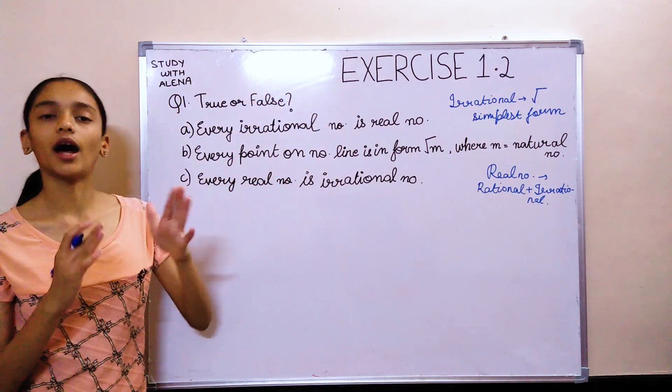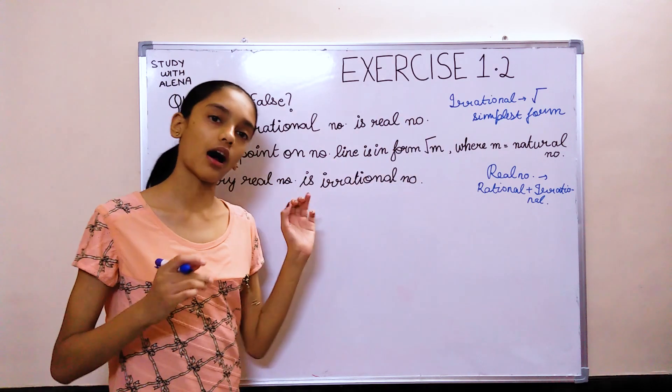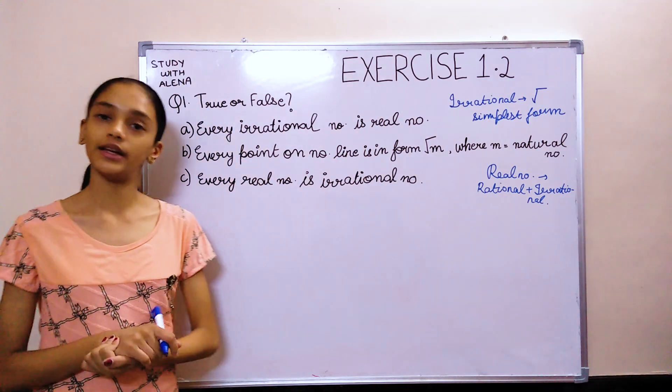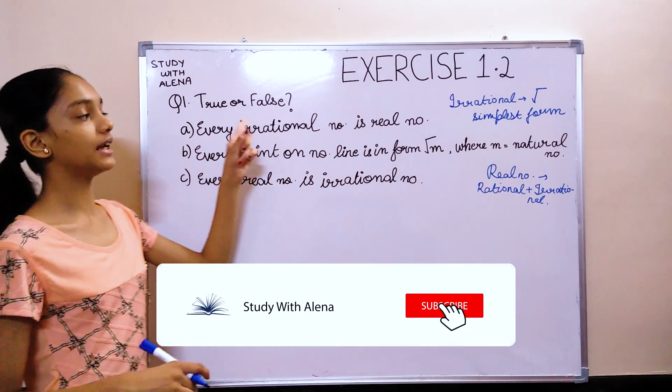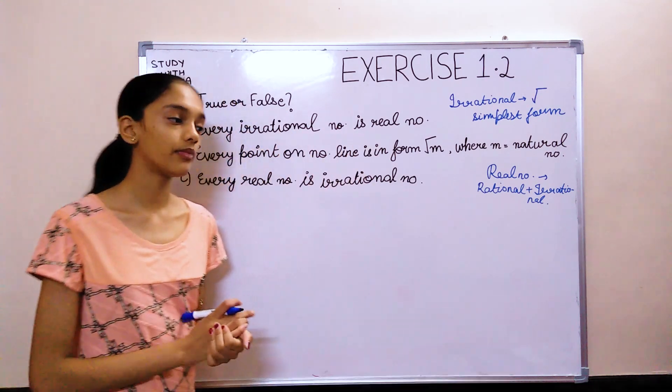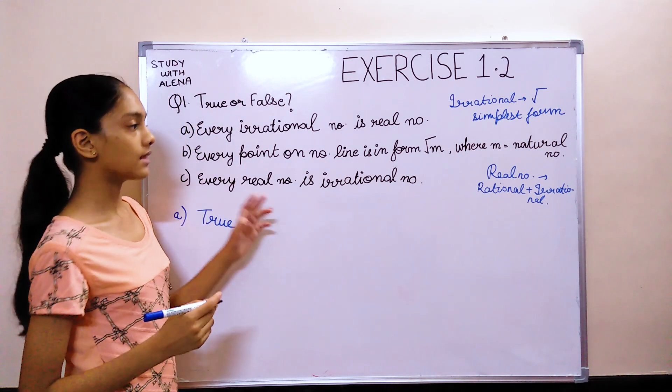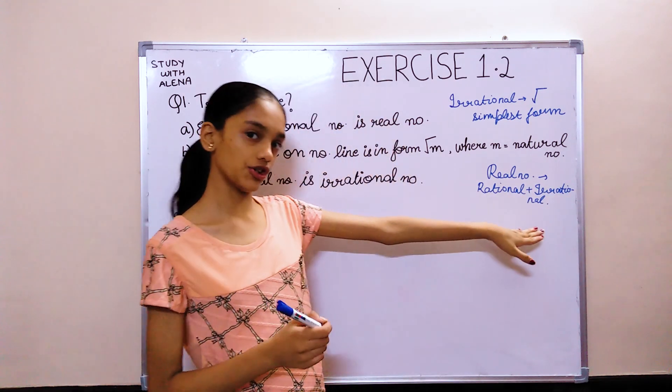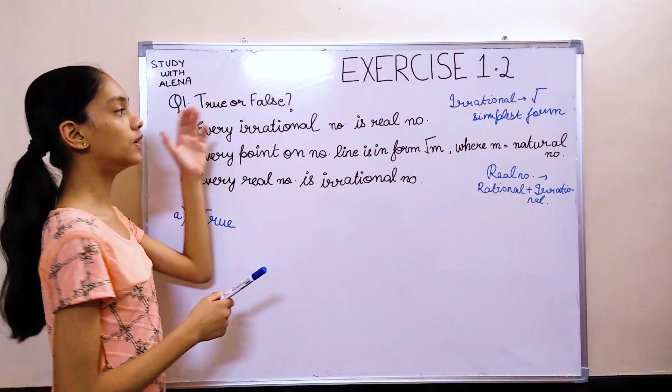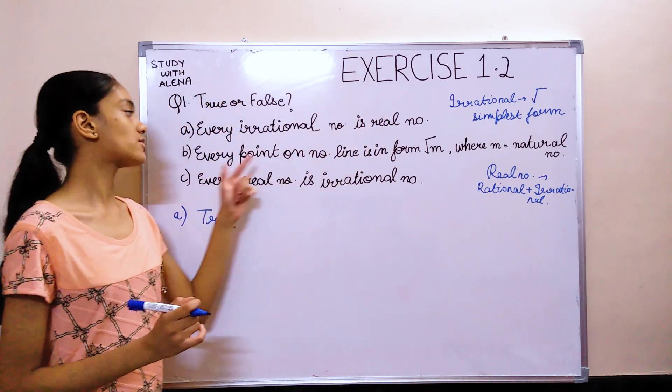So, real numbers are collection of rational and irrational numbers. Irrational numbers are the numbers which are in the form of root in its simplest form. The question says, every irrational number is a real number. This statement would be true because real numbers have all the irrational numbers. So, all irrational numbers are real numbers.